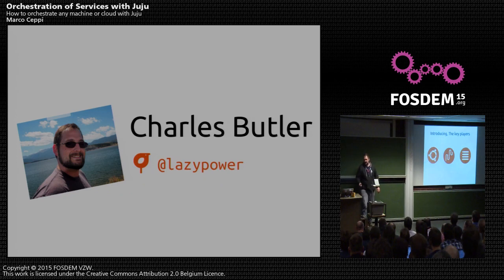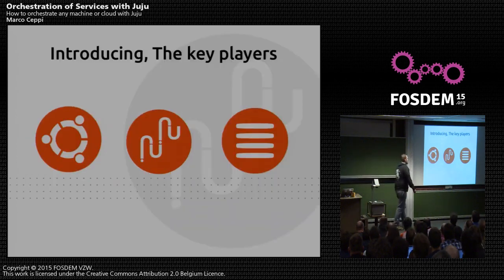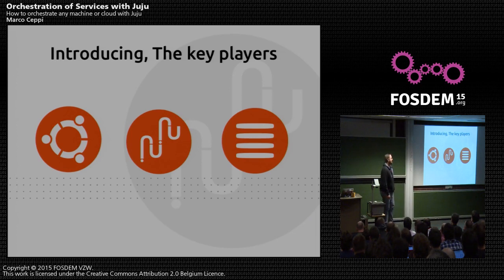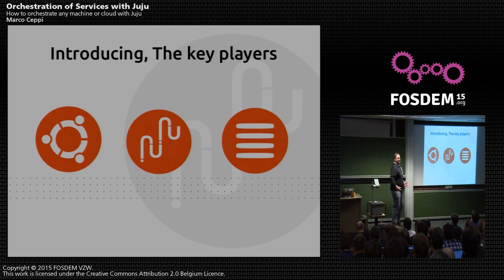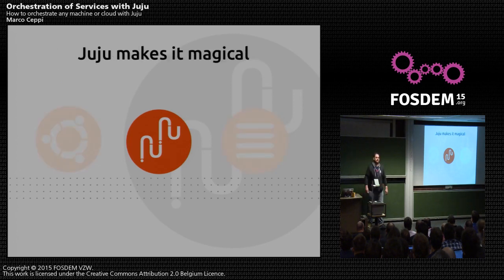I'm here to talk to you today about some of the key players that we have in the Ubuntu ecosystem for orchestrating clouds. We've got your base core Ubuntu server. We've also got Snappy Core now, which was recently introduced for the Internet of Things, and Ubuntu Touch. We've got MAAS on the far side, but we're not going to talk about those today. We're going to focus on Juju.